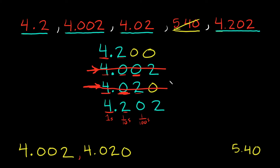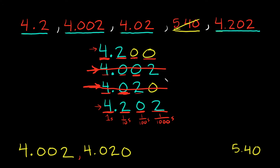Now which is smaller between the two remaining numbers? They both have a 4 in the ones place, both have a 2 in the tenths place, and both have a 0 in the hundredths place — so none of those help. Going to the thousandths place: up here I have a 0 and down here I have a 2. Zero is smaller than two, so 4.200 is the next number.